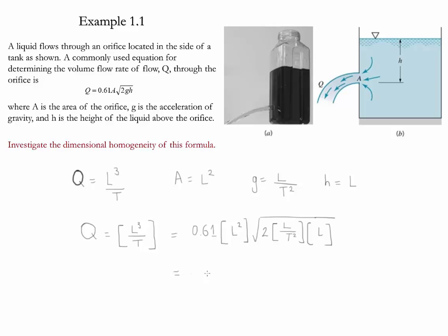Now let's do the right side of the equation. We're going to ignore the constants, we're just going to do the dimensions. So this is length square. This is length times length becomes length square divided by time square. The square root of this simply becomes L divided by T, and then this becomes length cube divided by time.